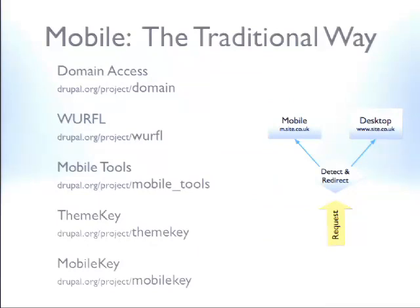This is the way people have been doing mobile sites for the longest time. The first thing that you think of when you think of multi-site setup is Domain Access. This is a module developed primarily by a coworker of mine at Palantir, Ken Rickard. Domain Access allows you to have content that is shared by different domains — you can have a single piece of content that publishes both to the m.domain and the www.domain. This is super useful, super powerful. Highly recommend it. And it doesn't get enough attention when we talk about mobile development.